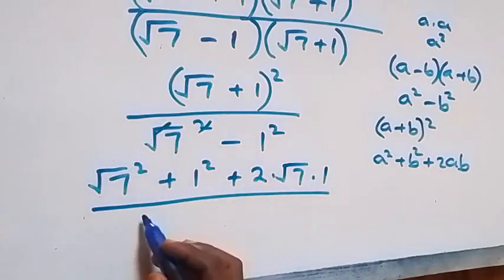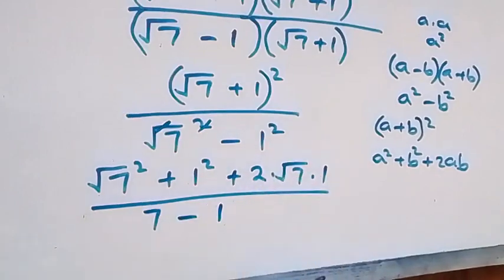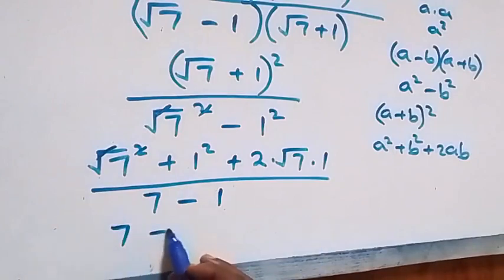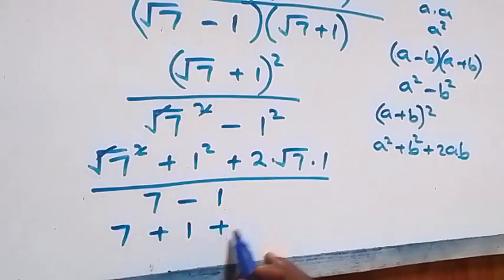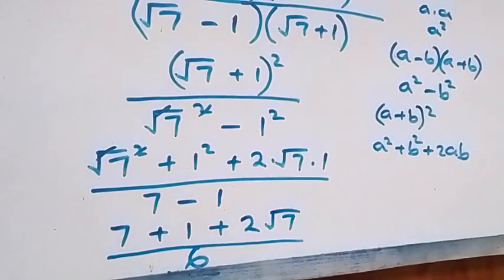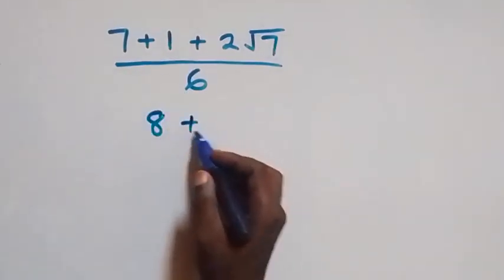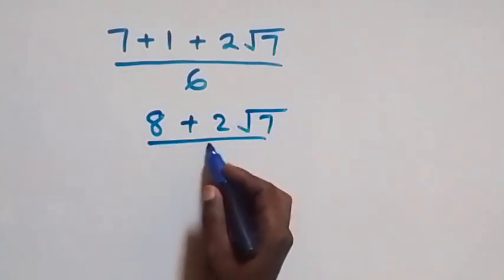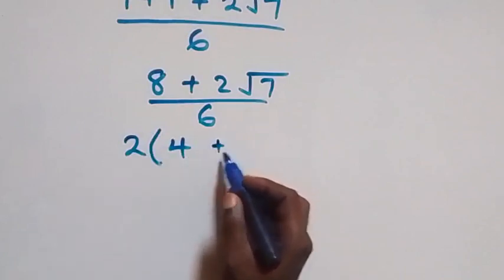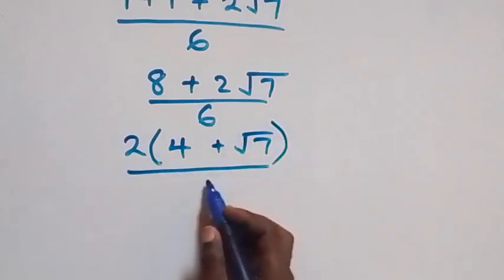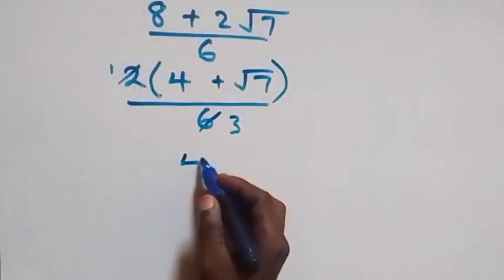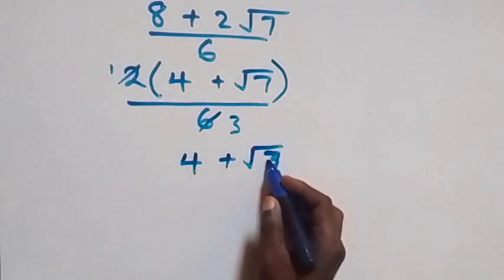The square and square root cancel, so we have 7 plus 1 squared, which is 1, plus 2 root 7, over 7 minus 1 which is 6. That gives us 7 plus 1 equals 8, so we have 8 plus 2 root 7 over 6. We can factor 2 out: 2 times (4 plus root 7) over 6, and 2 over 6 simplifies to give us (4 plus root 7) over 3.